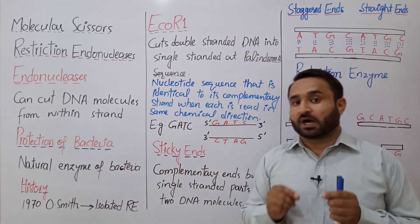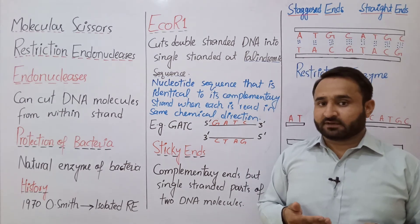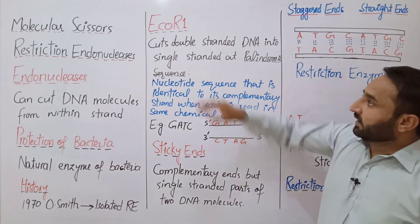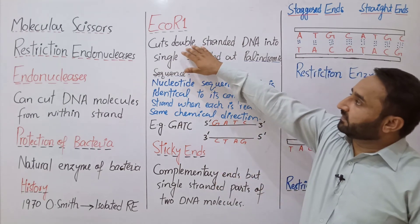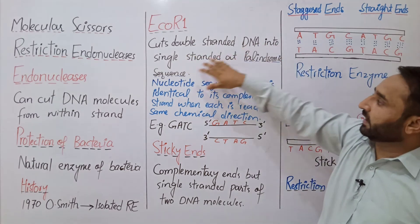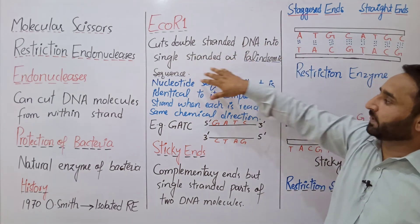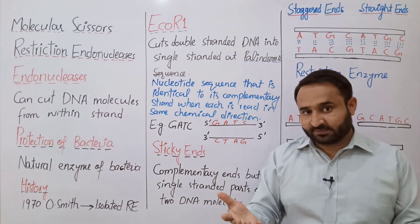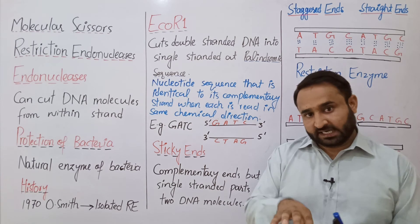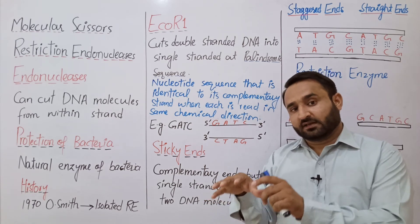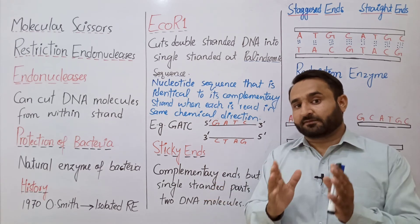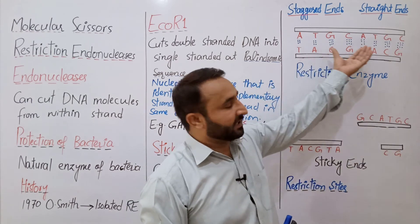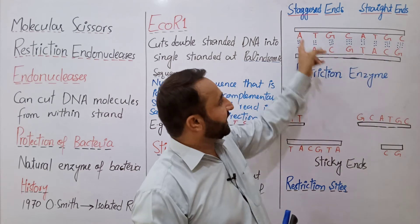Let's look at an example of a restriction endonuclease enzyme. Its name is EcoRI — Eco stands for E. coli, R1 stands for restriction endonuclease 1. EcoRI is a restriction enzyme that cuts double-stranded DNA into single-stranded DNA at the palindromic sequence. EcoRI cuts the double-stranded DNA from within at the palindromic sequence.